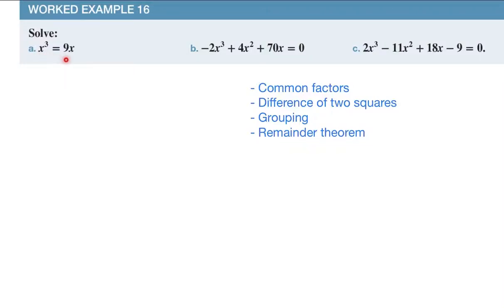Solve x cubed equals 9x. Now I'm going to quickly show you the biggest mistake students make. They have x cubed equals 9x, they say let's divide by x both sides, and then they say x squared equals 9. What happens is one of your solutions has gone missing and that is not good.